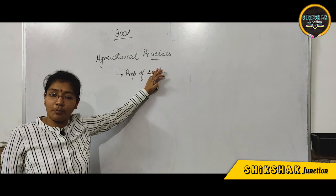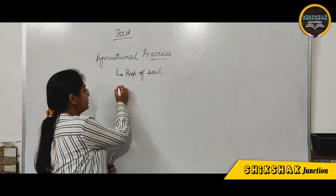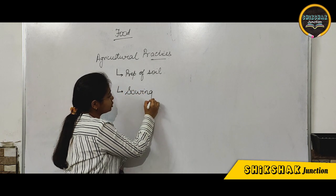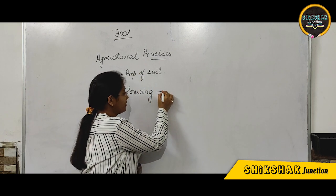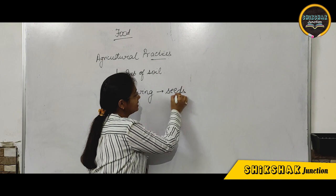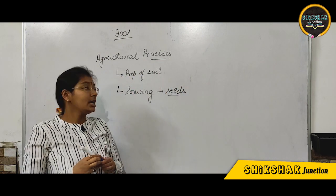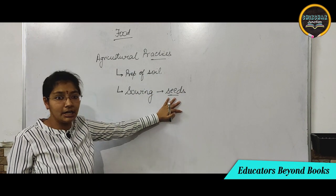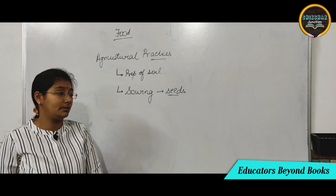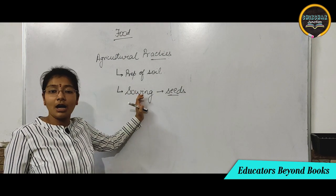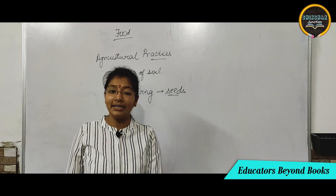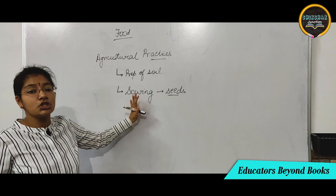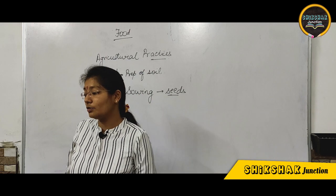Now our soil is ready for crops to grow. The next step is sowing — we have to sow the seeds in the field. Sowing is the act of planting seeds into our field. It is termed as the sowing method.